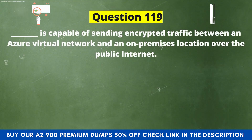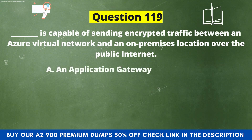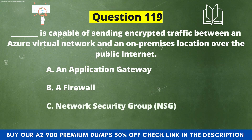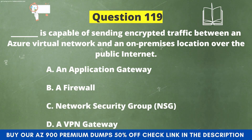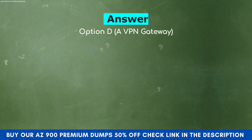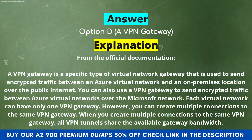Next question. Which of the following is capable of sending encrypted traffic between an Azure virtual network and an on-premises location over the public internet? Option A: An application gateway. Option B: A firewall. Option C: Network security group. Option D: A VPN gateway. The correct answer is Option D, A VPN gateway. A VPN gateway is a specific type of virtual network gateway used to send encrypted traffic between an Azure virtual network and an on-premises location over the public internet. Each virtual network can have only one VPN gateway; however, you can create multiple connections to the same VPN gateway, where all VPN tunnels share the available gateway bandwidth.